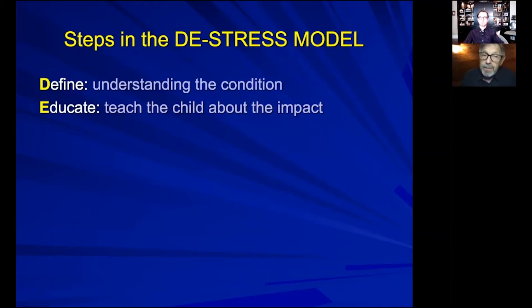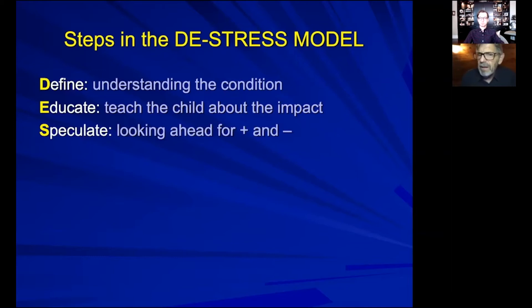We have to speculate — we have to look ahead. We have to look at the kid's strengths and weaknesses before approaching the task. We have to think about that rhinoceros and say, what does this animal have that will allow it to be successful? And what are the liabilities — the problems that might make things more difficult? Because if we understand those, we can use the strengths and minimize or work around the weaknesses.